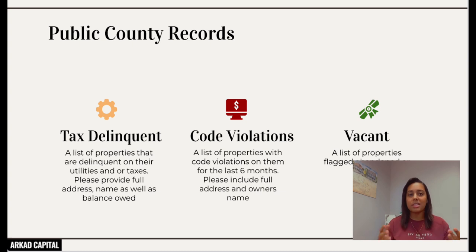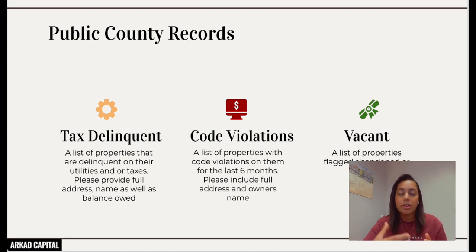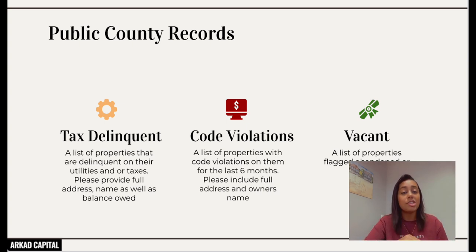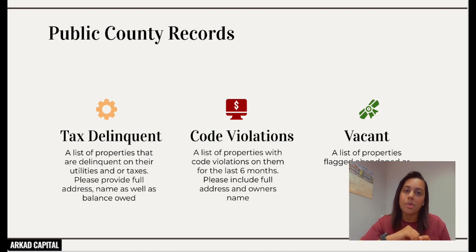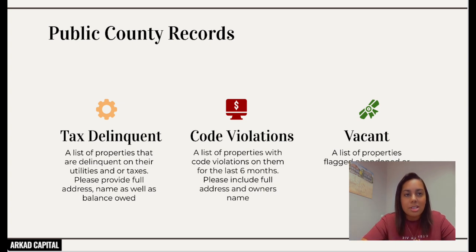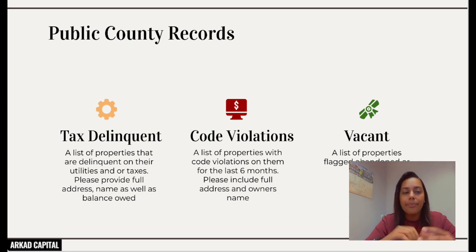For code violations — in New Jersey, that can be anything: overgrown grass, roaches, bedbugs, mice, cracks on the sidewalk, not shoveling snow. Every county is a little different. Rather than driving around looking for overgrown grass, I can get a list of code violations and call them up. Overgrown grass might indicate a vacant property or a senior who can't mow their lawn. I ask for a list of properties with code violations from the last six months, including the full address and name so I can skip trace them.